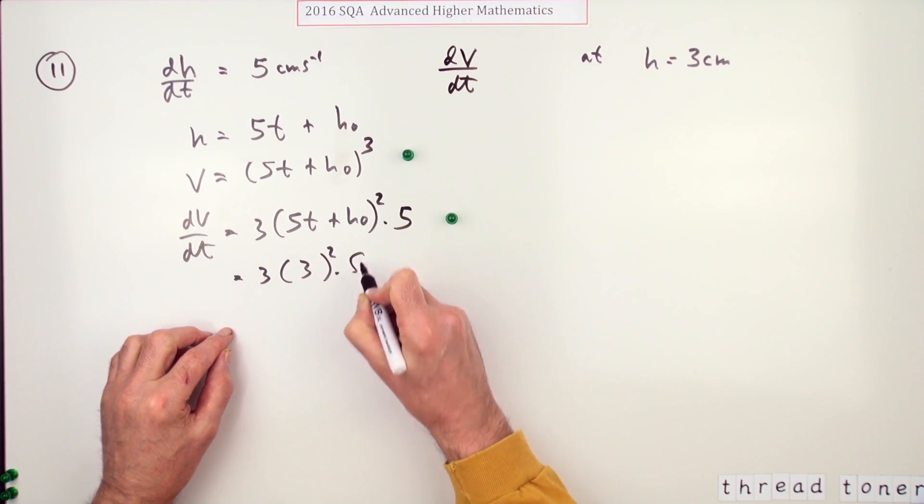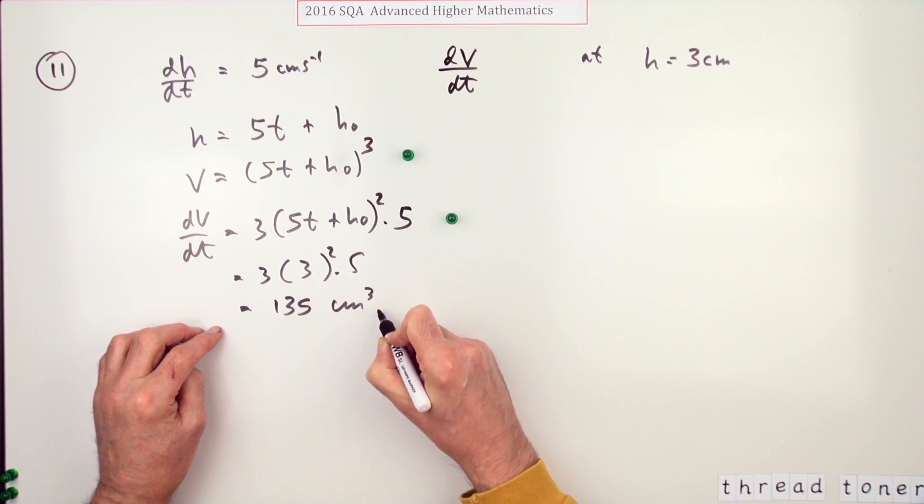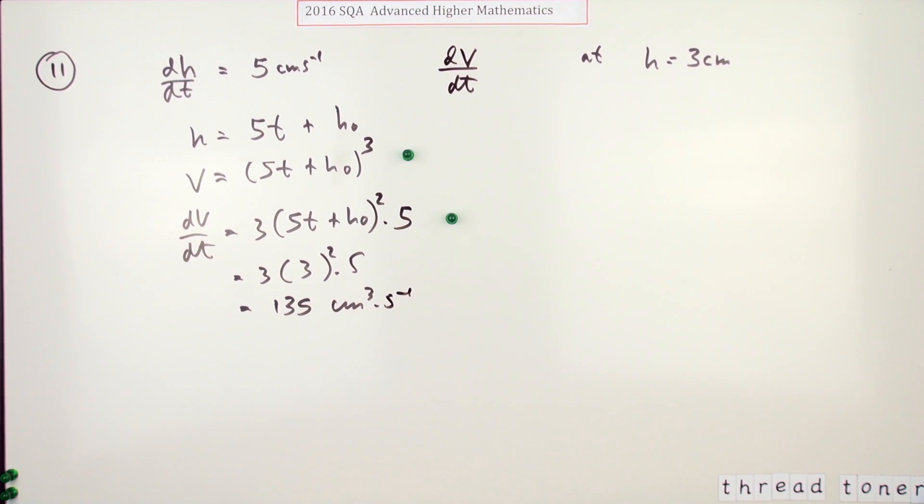So that should equal 3 times 3² times 5, which gives you 135 centimeters cubed per second. So I'm just putting the three in there instead of actually working out the time. That gives you the fourth mark, and then there's the final mark.